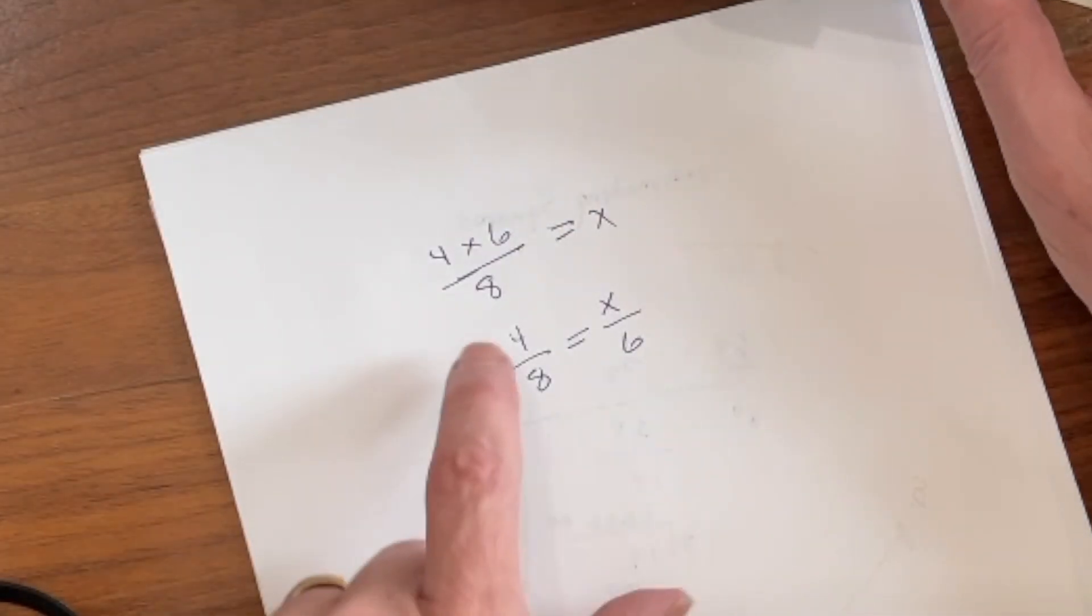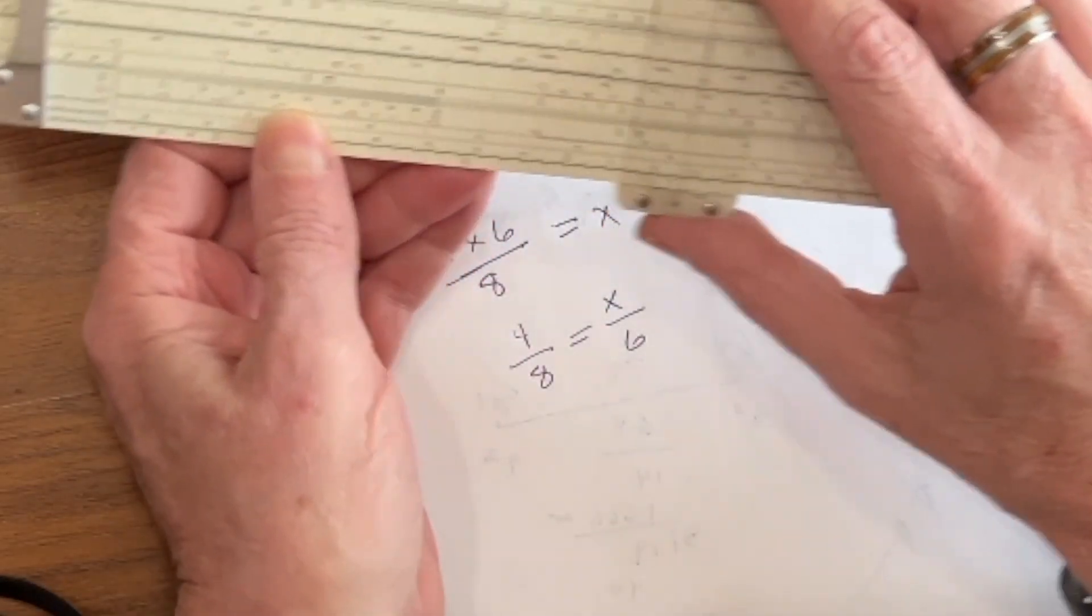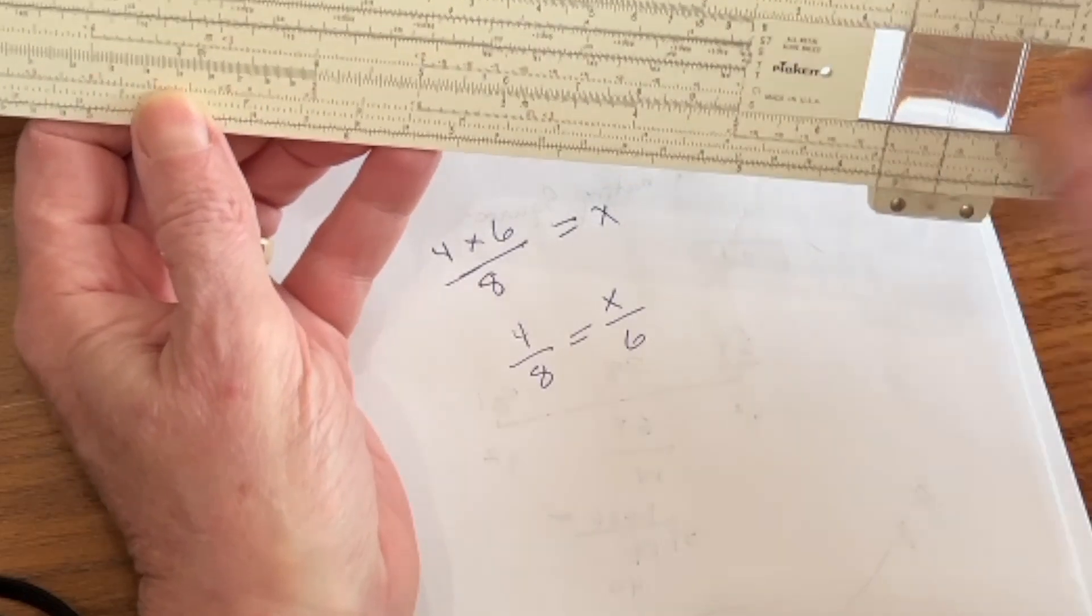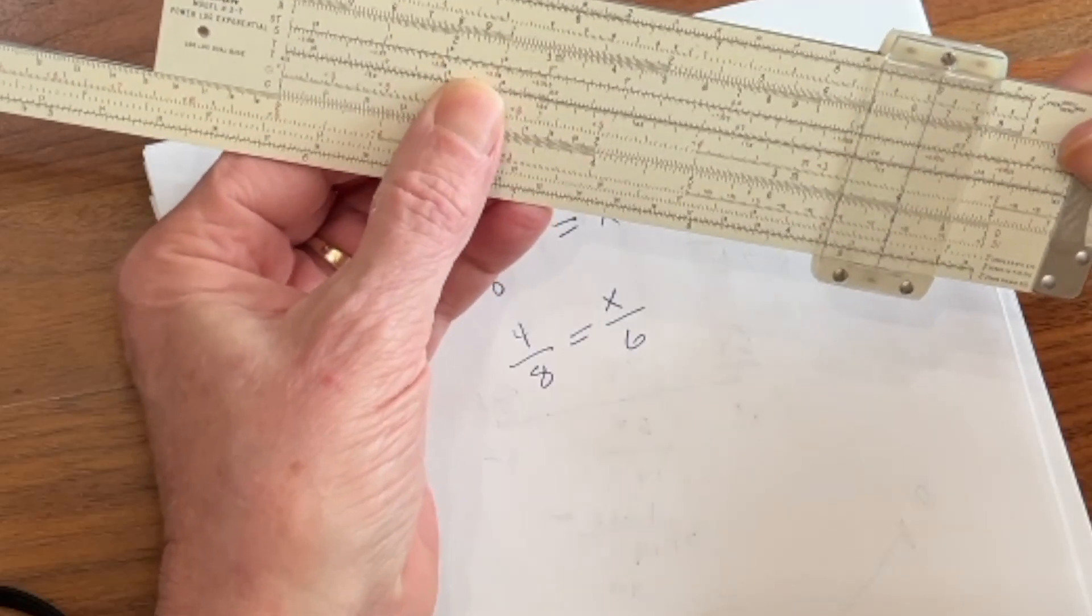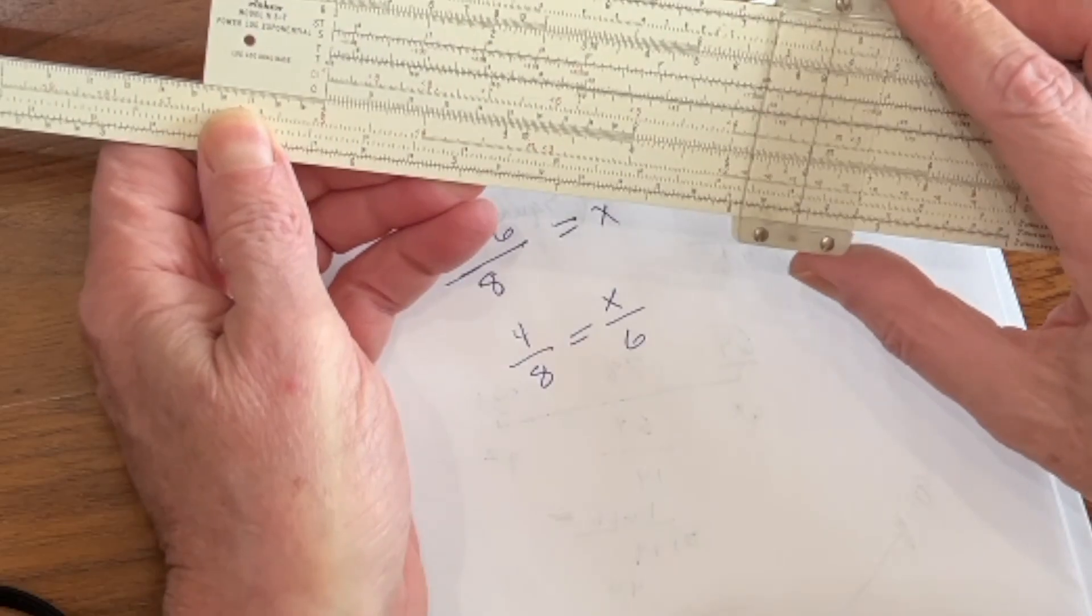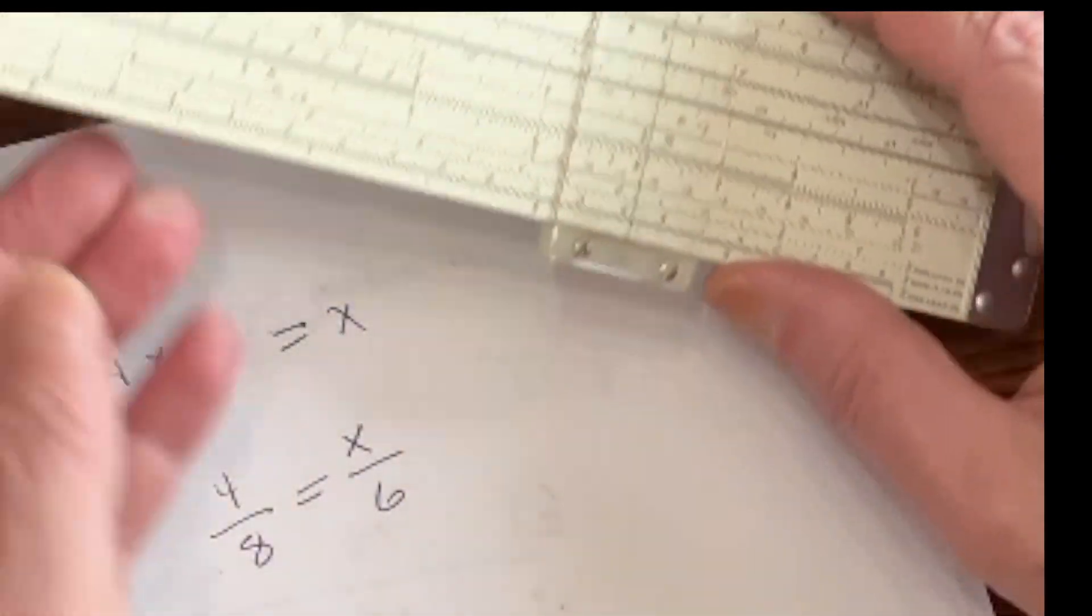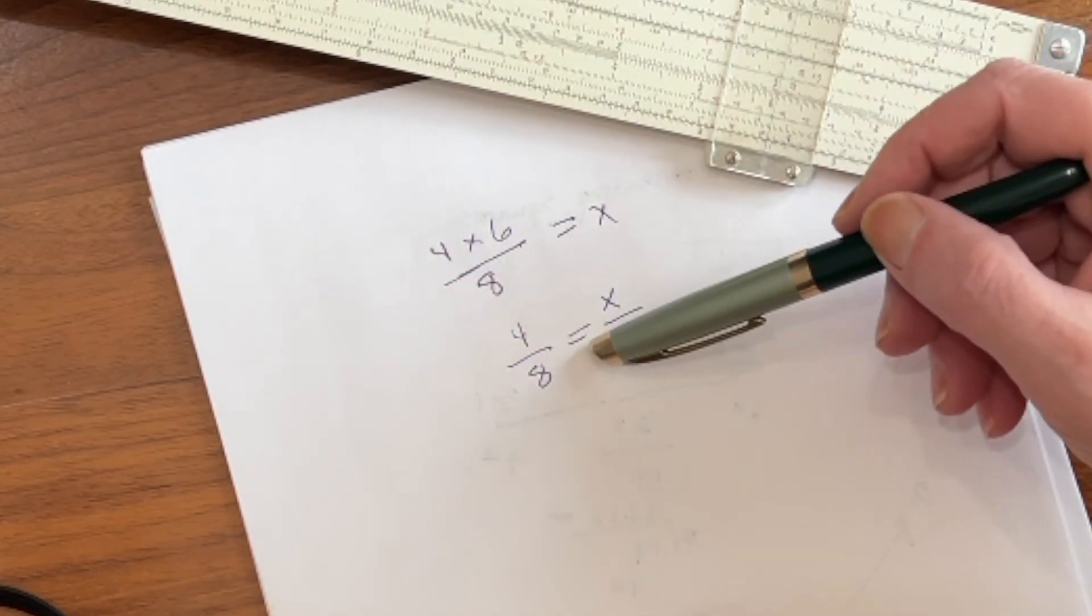So, what this says is that 4 is to 8 as x is to 6. So, if we come out here to 8, and we put the 4 over it, all we have to do is come over here to the 6 and read our answer right above it. That's pretty simple. There's a lot less slide and cursor movement if you solve by proportions.